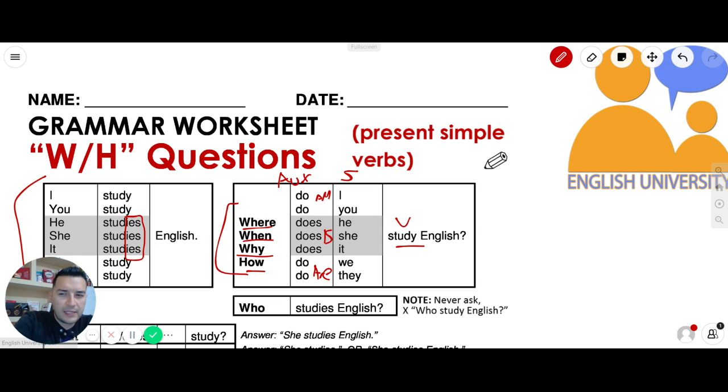WH plus the auxiliary. When, where, how, why, which, and which. Excellent.